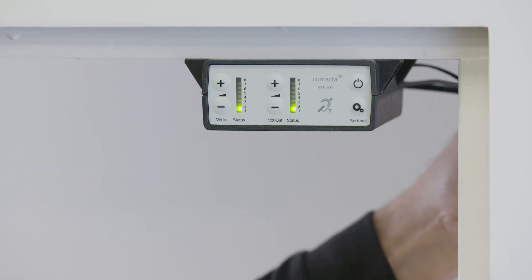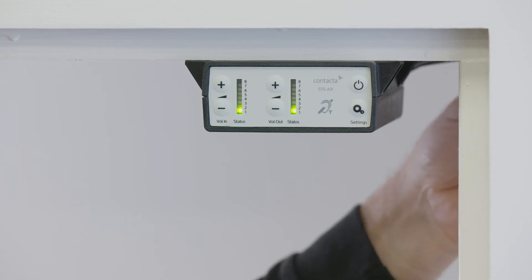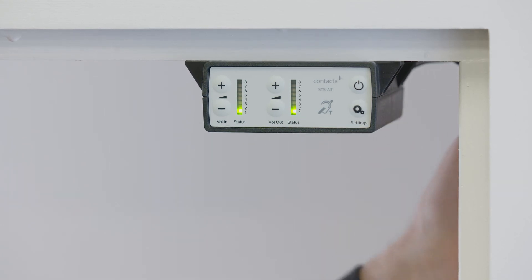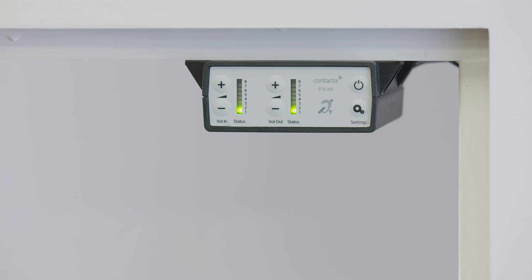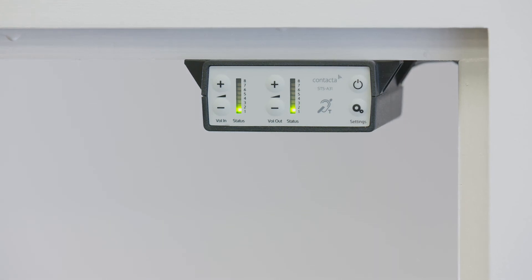Install the amplifier's power supply close to a power socket outlet, using the supplied mounting bracket and fixing screws. Route all cabling securely, fixing cables into position using provided cable clips or other suitable fixings.